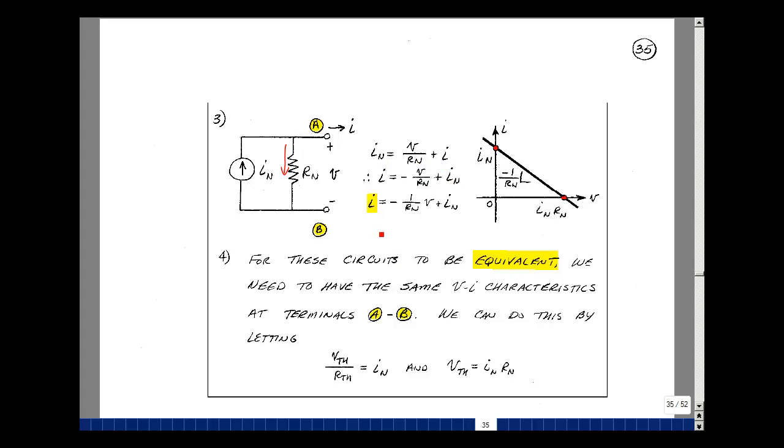And that's the equation of the straight line where I is the y-axis and V is the x-axis. Find the intercepts. When V is equal to zero, I is equal to I Norton. That's this point right here. And when I is equal to zero, V is equal to R Norton times I Norton.